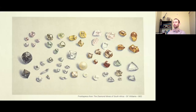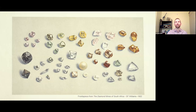This is someone's collection sketched from a book from 1902 — their collection of rough diamonds. I show this picture a lot because it shows a whole different range of morphologies. Right now it might look like a wild smattering of shapes, but hopefully by the end of this we can revisit this image and you'll start to see some familiar patterns emerging.